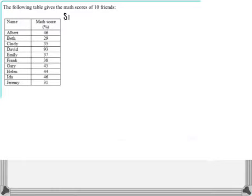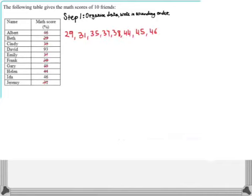So the first thing we have to do is organize the data, and we're going to do that by writing it in ascending order. So as we go from smallest to largest, we cross off the data that we've written down, so we're not doubling up or missing out on any data points. So there it is, smallest to largest. That's called ascending order.